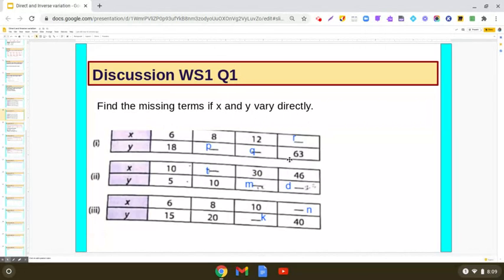r in the place of the blanks which is given over here. So let us start solving the first part. You tell me, in this first part x upon y is 6 upon 18. So for finding p what we have to do? Yes,